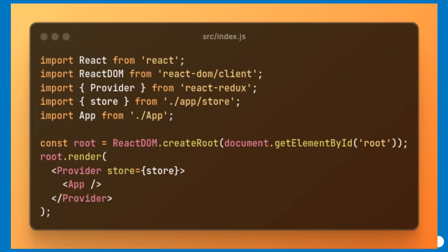This entry point for the React application sets up the Provider from React Redux to inject the Redux store into the component tree. By wrapping the app component with Provider and passing the store, every nested component gains access to the Redux state and dispatch functionality, ensuring global centralized state management. This foundational setup is crucial for any Redux-powered React app, facilitating robust and predictable data flow.